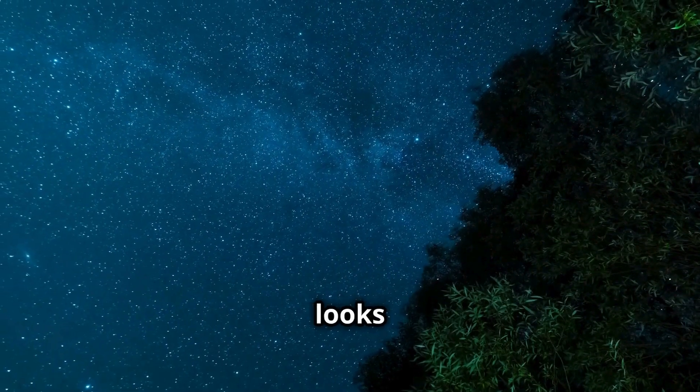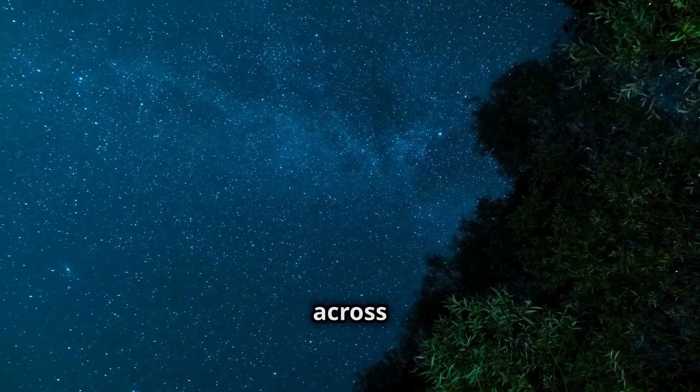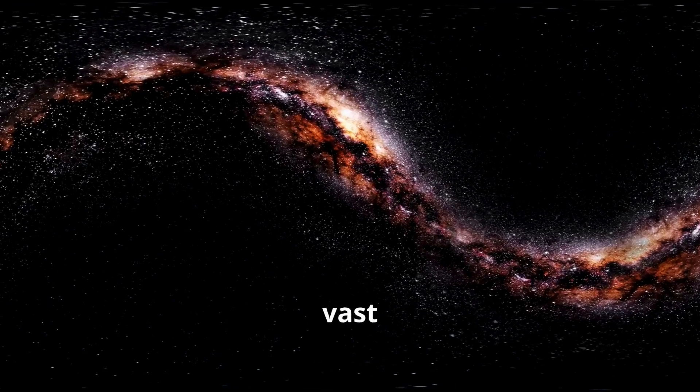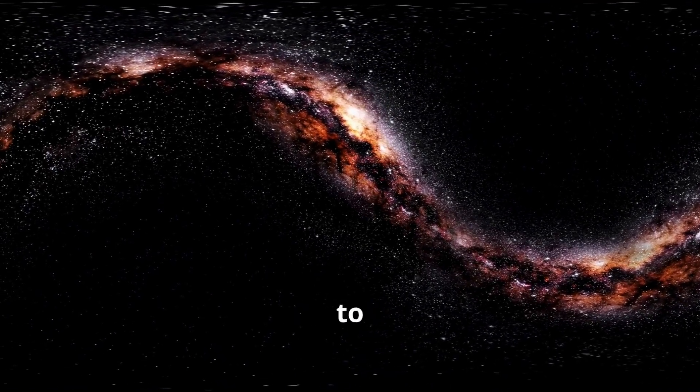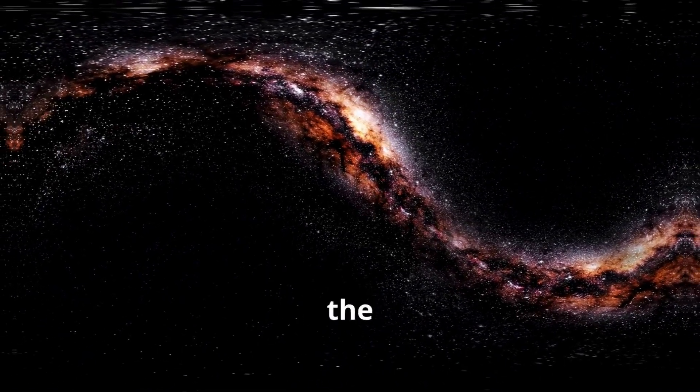From Earth, the Milky Way looks like a milky band of light stretching across the sky, hence the name. It's so vast that it would take light 100,000 years to travel from one side of the galaxy to the other.